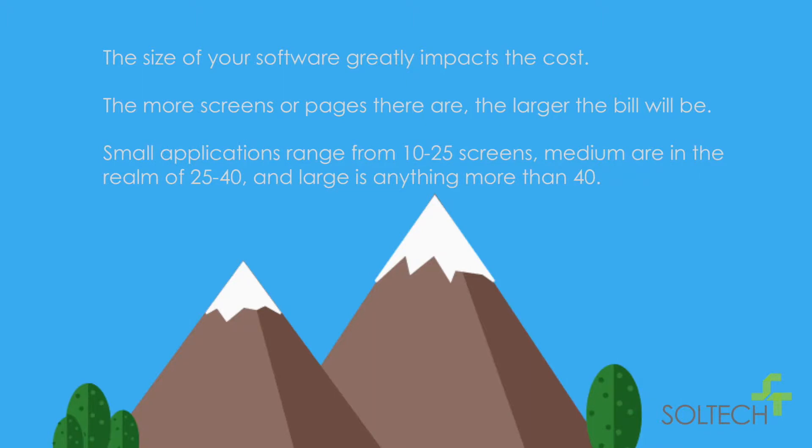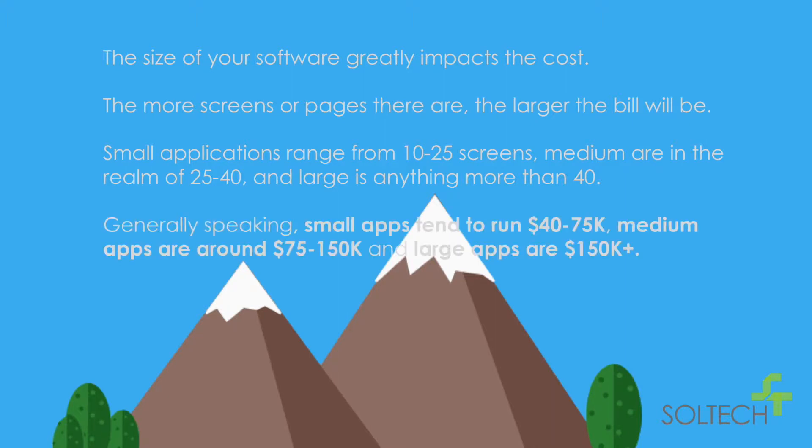Small applications range from 10 to 25 screens, medium are in the realm of 25 to 40, and large is anything more than 40 screens. Generally speaking, small apps tend to run $40,000 to $75,000, medium apps are around $75,000 to $150,000, and large apps are $150,000 and up.